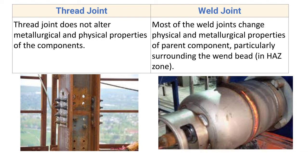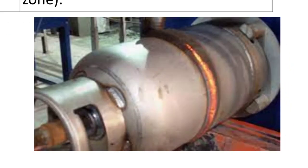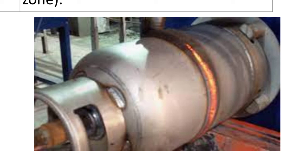Thread joining does not alter the metallurgical and physical properties of the component, as the process is carried out at room temperature — the two plates are simply joined by inserting a bolt and clamping a nut over it. Most weld joints, however, change the physical and metallurgical properties of the parent component, particularly surrounding the weld joint, because heat is added and the microstructure closer to the weld changes, altering mechanical properties.